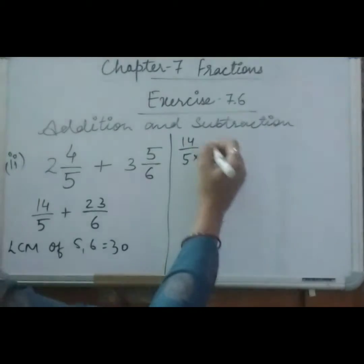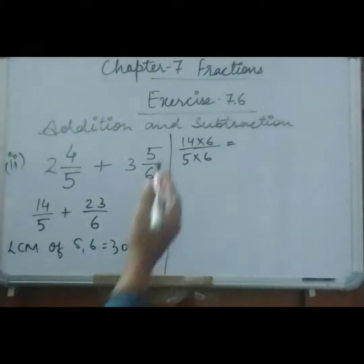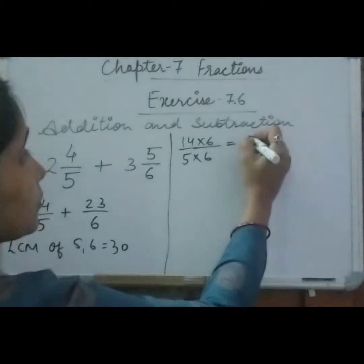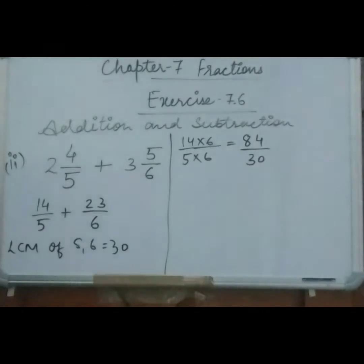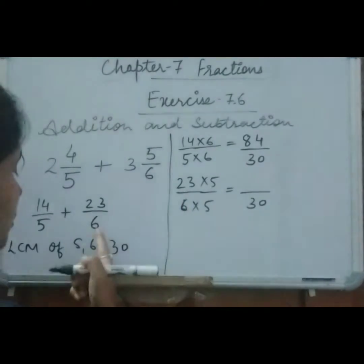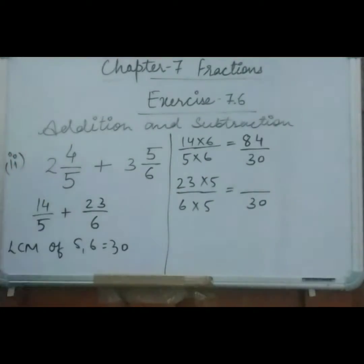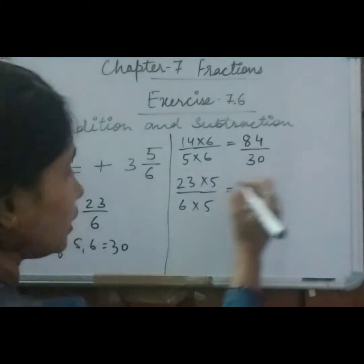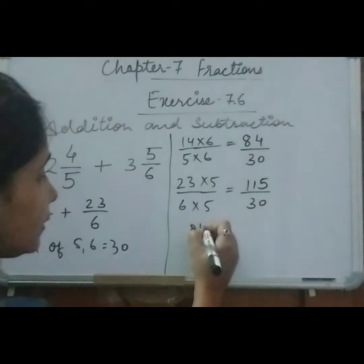So here this is 14 by 5. So to make it 30, 5 times 6 is 30, and 14 into 6, this is 84. And 5 times 6 is 30. So now this one, 6 times 5 is 30. So we will multiply in both sides, both numerator and denominator by 5. So it will come 5 times 3 is 15, 1, 5 times 3 is 15, 11, 115 upon 30.